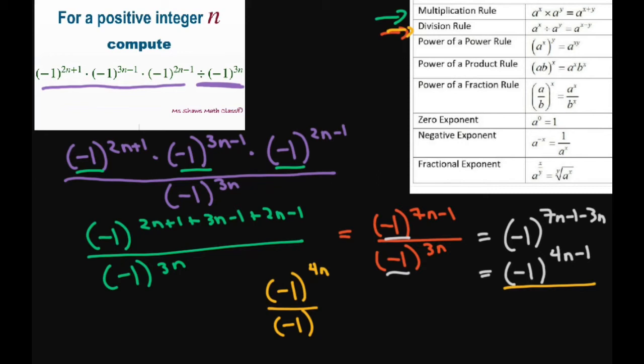I can write this as, let's simplify this as (-1)^4 and then to the power of n, divided by (-1).